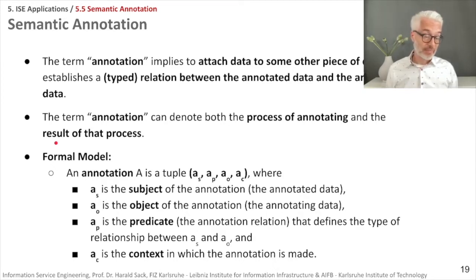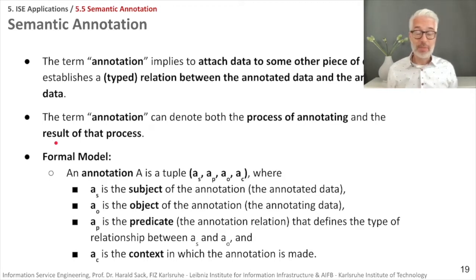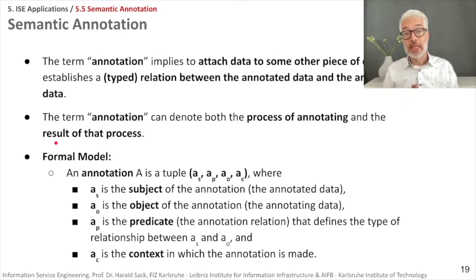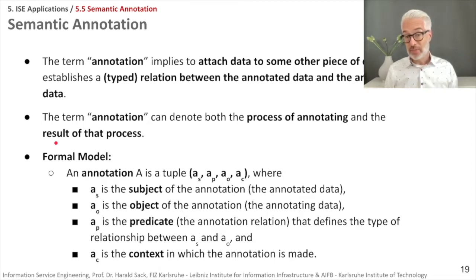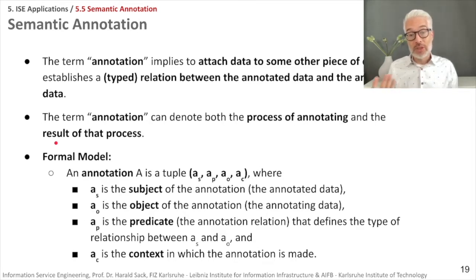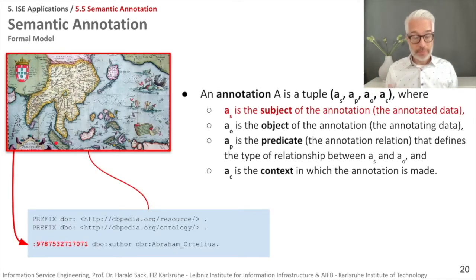Semantic annotation: the term 'annotation' implies attaching data to some other piece of data and it establishes a typed relation between the annotated data and the annotating data. The term can denote both the process of annotating and the result of that process. There is a formal model: an annotation A is a tuple (AS, AP, AO, AC), where AS is the subject — the annotated data — AO is the object — the annotating data — AP is the predicate — the annotation relation defining the type of relationship — and AC is context data in which the annotation is made.